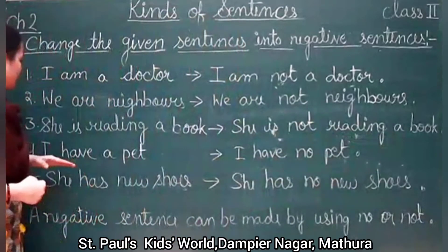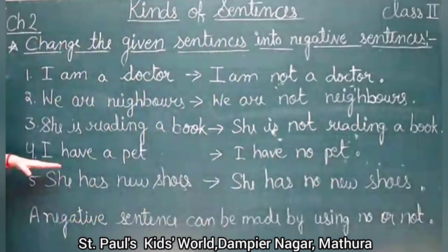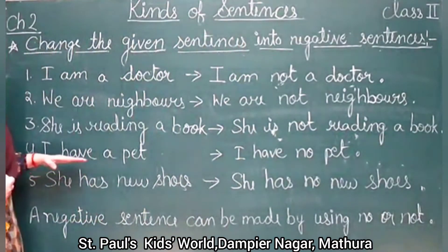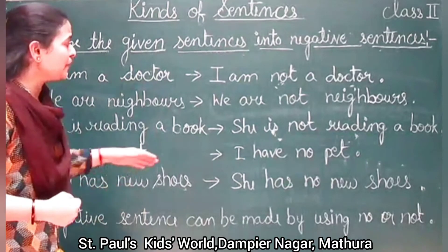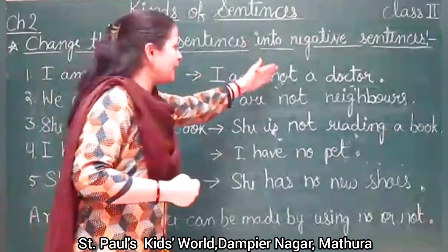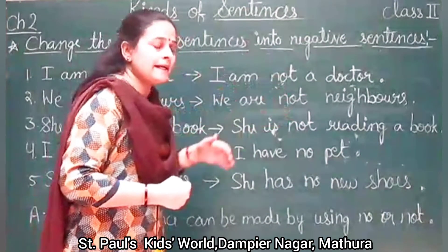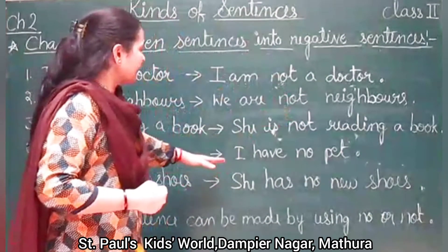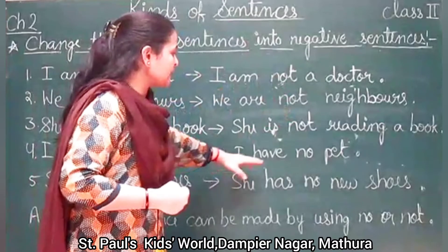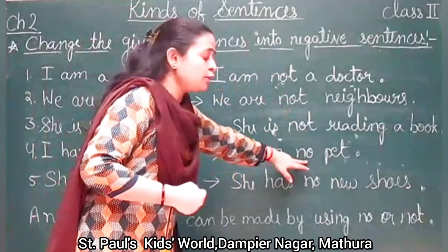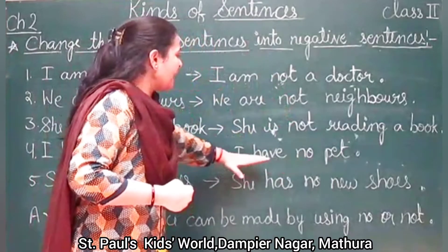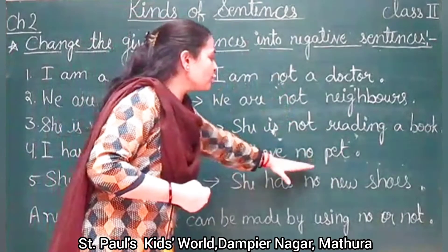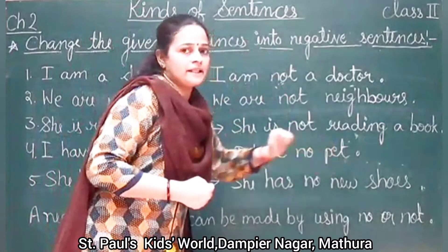In the fourth one, 'I have a pet.' Now in the previous ones we added 'not' to the sentence, but in this sentence we will add 'no.' So it becomes 'I have no pet.'